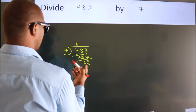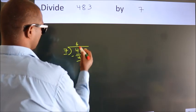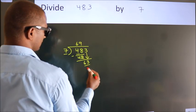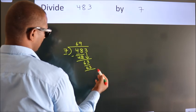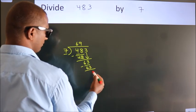When do we get 63 in the 7 table? 7 times 9 is 63. Now we subtract and get 0.